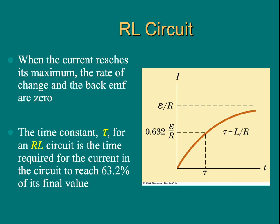The time constant tau for an RL circuit is the time required for the current in the circuit to reach 63.2% of its final value.